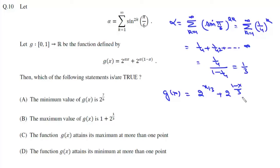Now if we find g dash x we'll get 2 to the power x by 3 into 1 by 3 log 2, and here it will be 2 to the power of 1 minus x by 3, minus 1 by 3 log 2.